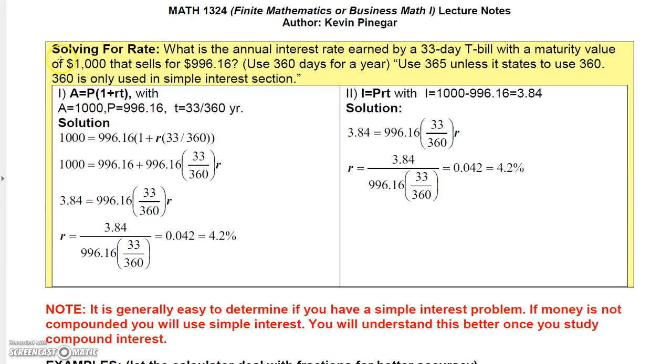Okay, now let's look at this problem. I'll let you read it. But basically, what we're looking for is we're going to be solving for the rate. So what we're going to do is we want to know the annual interest rate. We have a 33-day T-bill that matures to $1,000 and sells for $996.16. We're going to use 360 days for a year in this particular example.